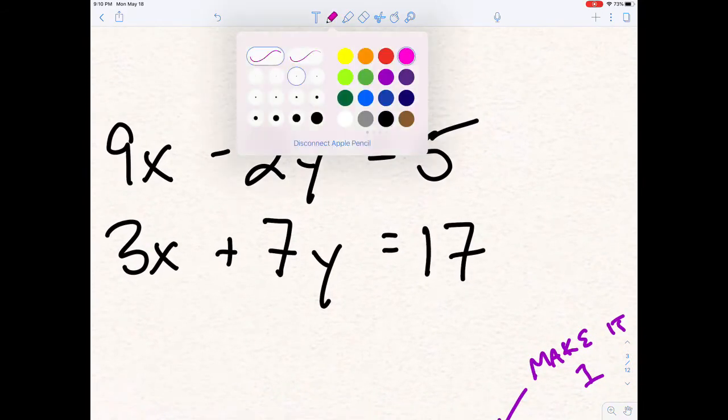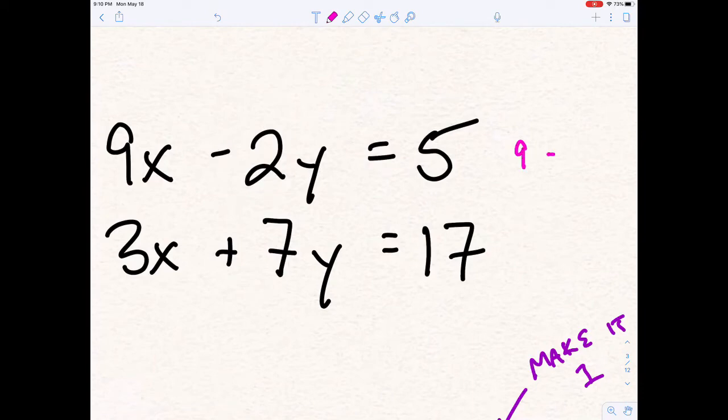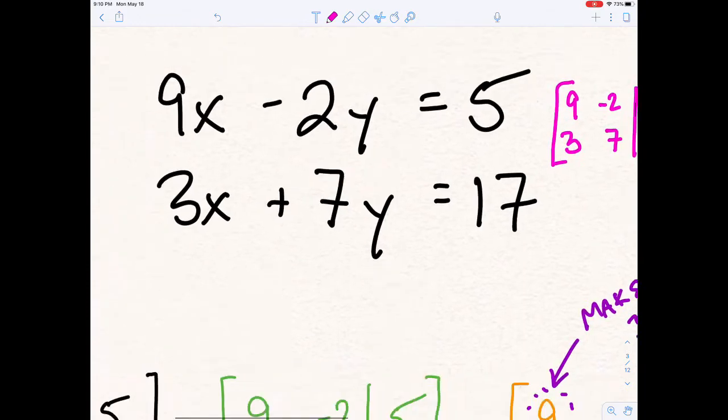With that in mind, let's go ahead and take a look at how we would accomplish this. First and foremost, just changing colors, I would do 9, negative 2, and 5, then 3, 7, and 17. Remember, we're doing the coefficients to the left of this vertical line right here. And to the right of the vertical line, we're going to go ahead and do the answers, right? The 5 and the 17.